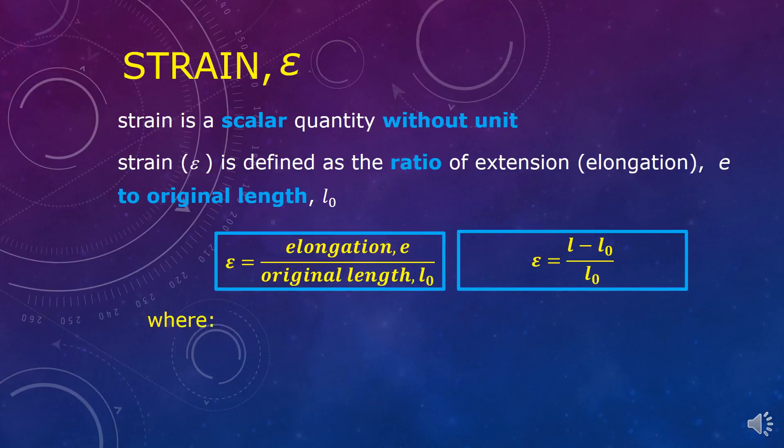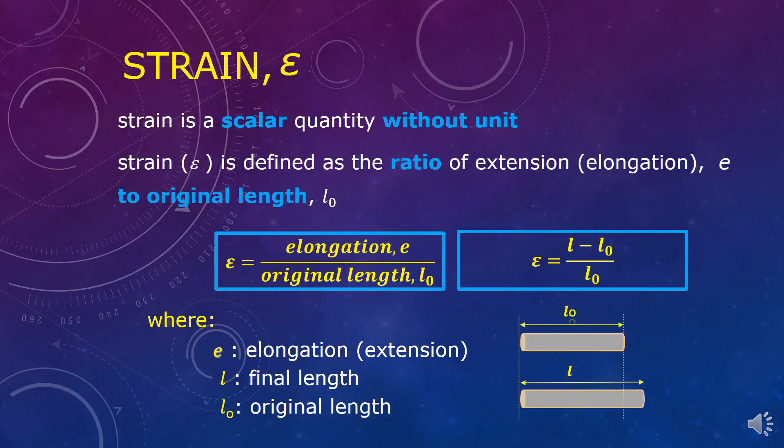Where e stands for elongation or extension, l is final length, and l₀ is original length.